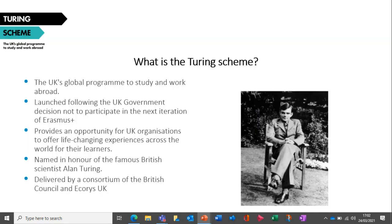So what is the Turing Scheme? It's the UK's global programme to study and work abroad, named in honour of the British scientist Alan Turing. It provides funding for international opportunities in education and training across the world, covering international mobility of students, learners and pupils. It offers exchanges globally across higher education, further education, vocational education and training, and schools. It will fund UK and overseas territories beneficiaries for outward mobility only. Turing allows organisations to provide pupils with a chance to develop new skills, gain vital international experience, boost employability, develop soft and language skills, a better understanding of other cultures, and build relationships with international peers.